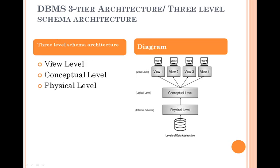Three-tier architecture, also known as three-level schema architecture: The first level is the view level. The second level is the conceptual level. The third level is the physical level. The diagram of three-level architecture is also presented.